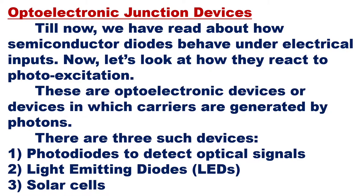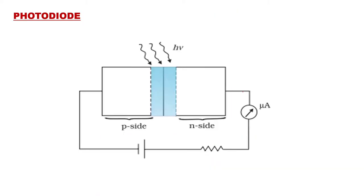Under this concept, we are going to study three devices. One is the photodiode, used to detect optical signals — it converts light energy to electrical energy. Second is the light emitting diode, LED, which converts electrical energy to light. Third is solar cells, which convert light energy to electrical energy. We will first see the concept of photodiode.